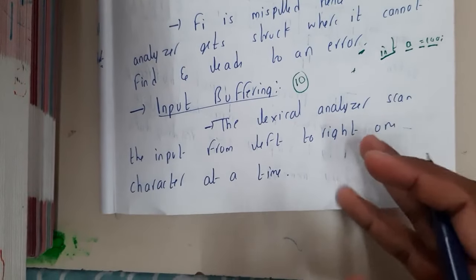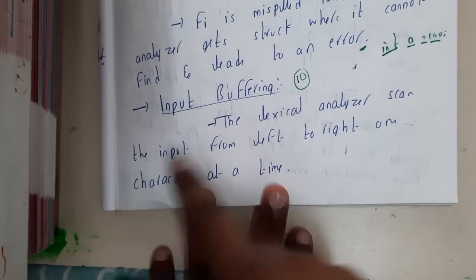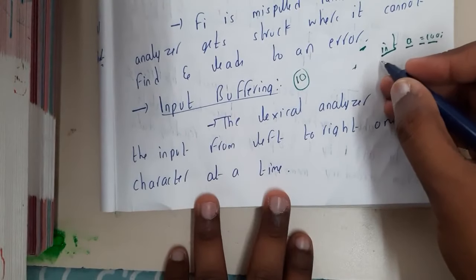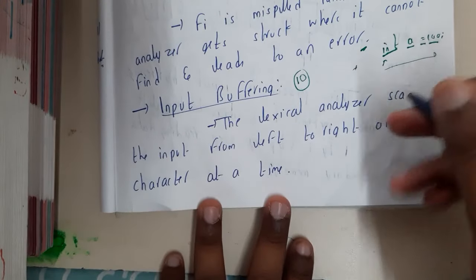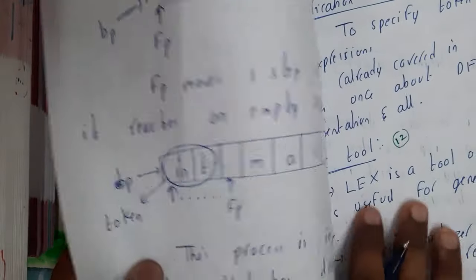That question will be answered in this lecture. The lexical analyzer scans the input from left to right. It starts from the beginning and ends at the semicolon, one character at a time. It will not be reading all at once but moving slowly.